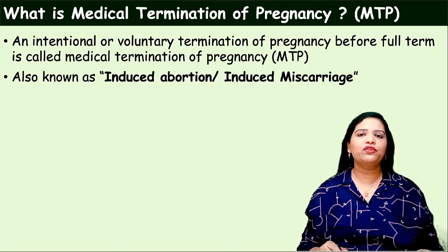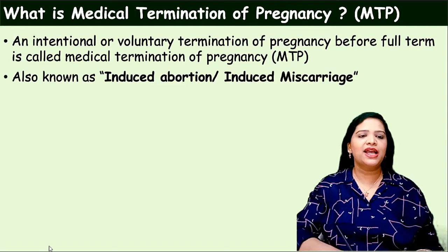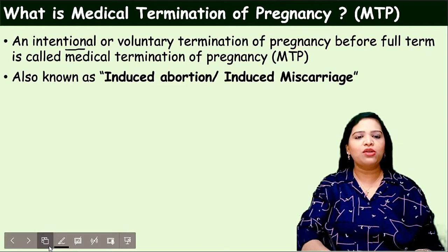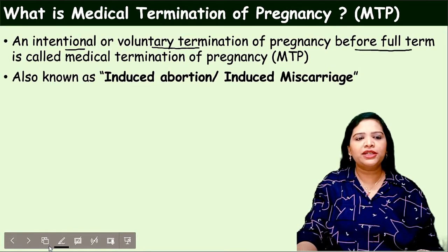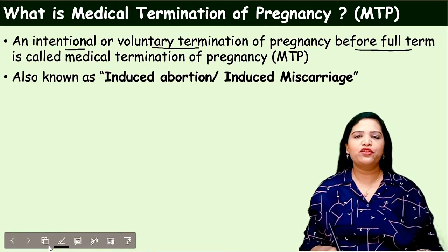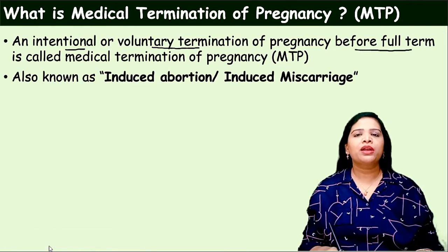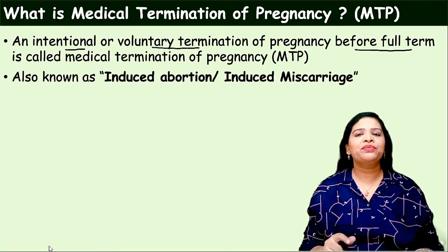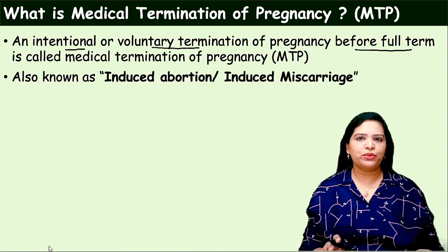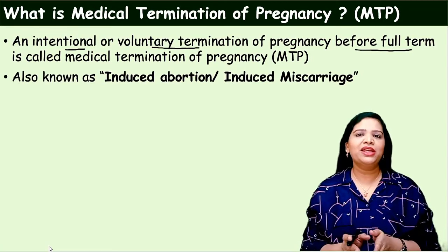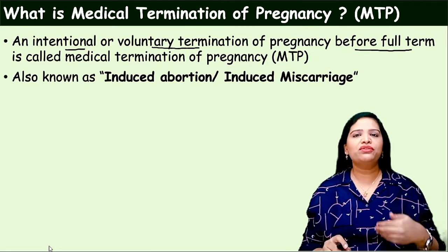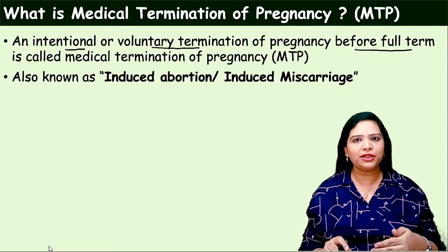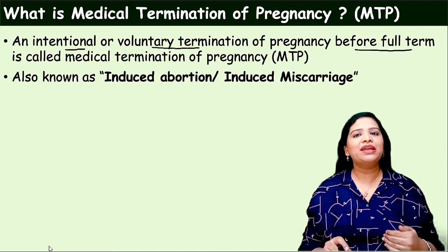What is medical termination of pregnancy MTP? It is an intentional or voluntary termination of pregnancy before full term. Here abortion is carried out. The baby is developing in the mother's womb, in the uterus. So before completion of the nine months, that is the full term, the baby is aborted.